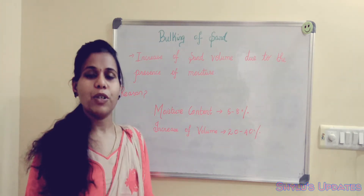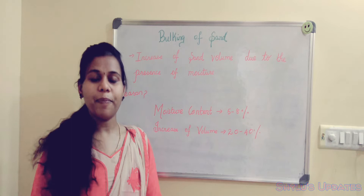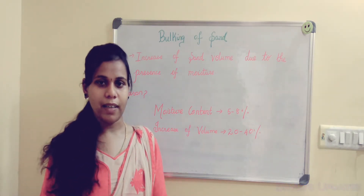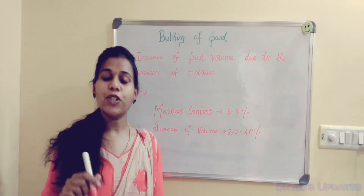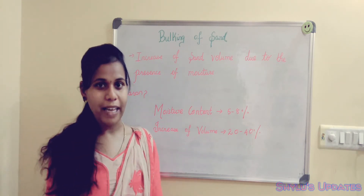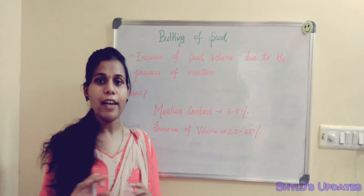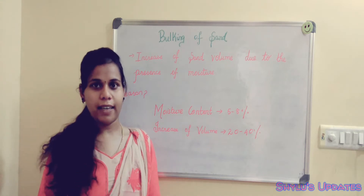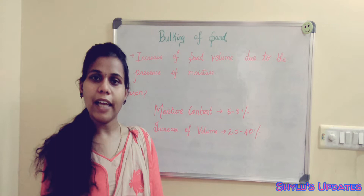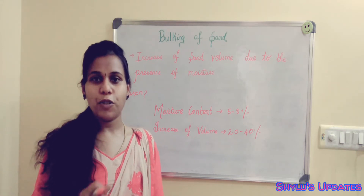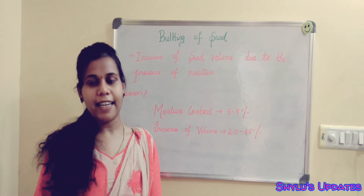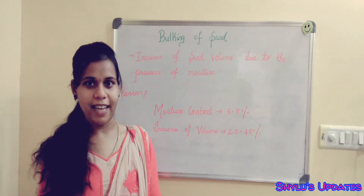What is the reason for this bulking of sand? This is due to the formation of a film of water around the sand particle, which causes the increase of sand volume. Bulking of sand depends on the grading of sand. Fine particles possess more bulking than medium and coarse sand, because fine particles are very small and absorb more moisture. So bulking will be more in finer sand than in coarse and medium sand.